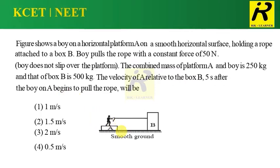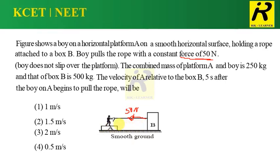What the question says is that the boy is pulling block B towards him with a force of 50 Newton. One important thing to observe: the surface on which both blocks A and B are kept is smooth, and the boy does not slip over the platform.